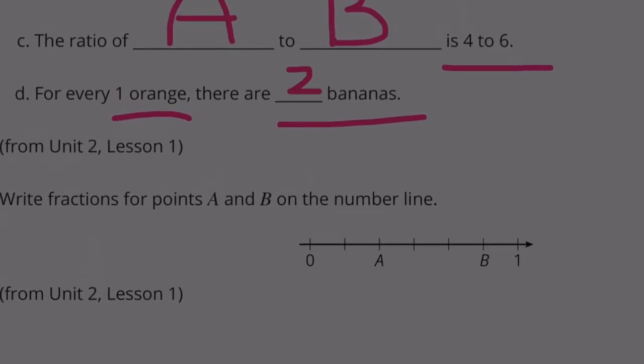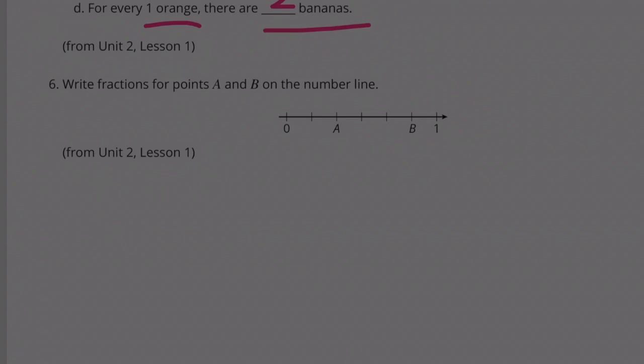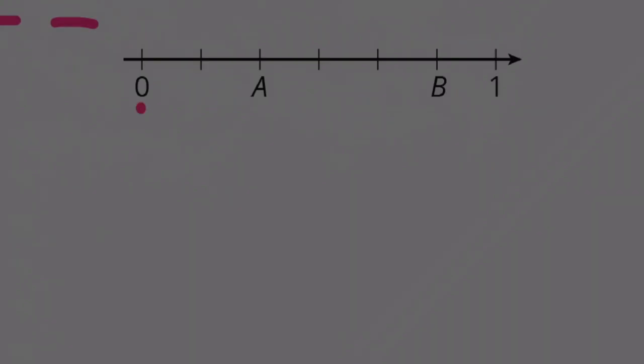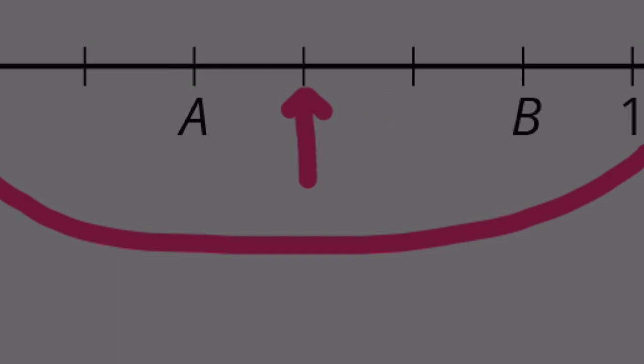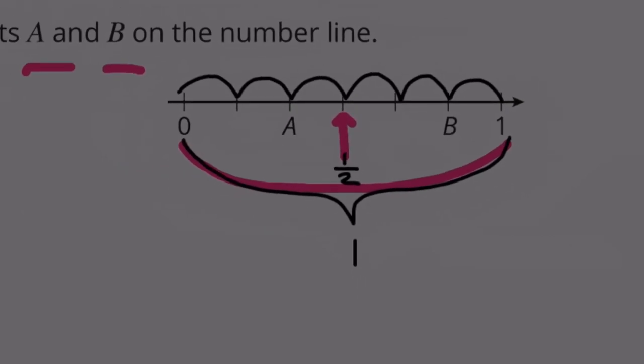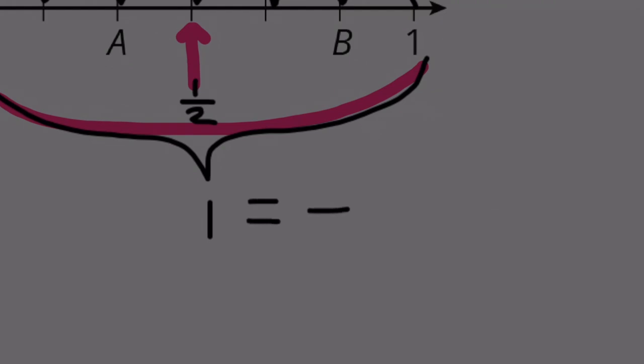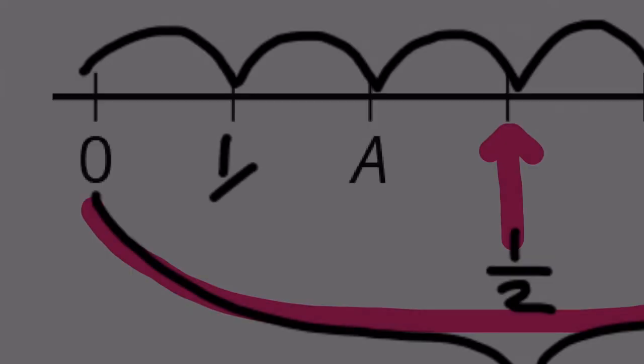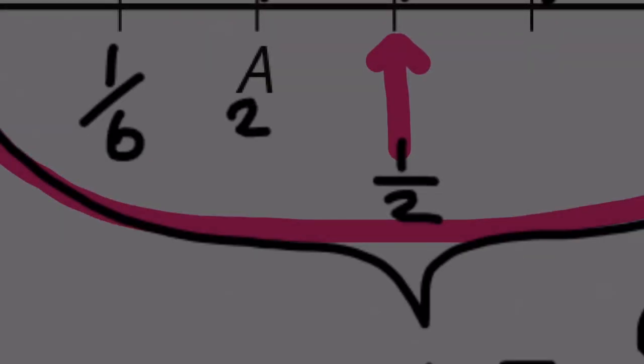Number 6: Write fractions for point A and point B on the number line. From 0 to 1 represents 1. This point here represents the halfway point, so this is 1 half. From 0 to 1, let's see how many pieces it's cut into: 1, 2, 3, 4, 5, 6. This is cut into 6 even pieces. The first one here would be 1 sixth. A would be 2 sixths, which is the same as 1 third.